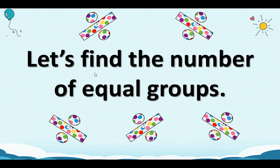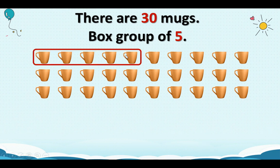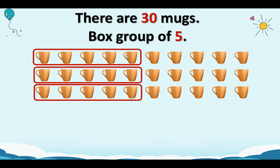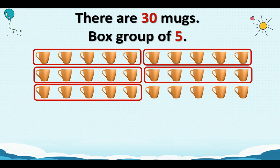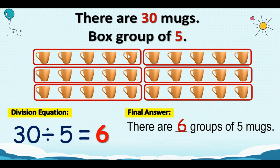This time, let's find the number of equal groups. There are 30 mugs. Box groups of 5. Let's count 5 and box, another 5 and box, count another 5 and box, another 5 and box, and another 5. How will we write the division equation for this? 30 divided by 5 equals how many groups of 5 mugs can you see? Final answer: there are 6 groups of 5 mugs.